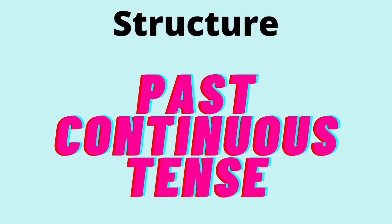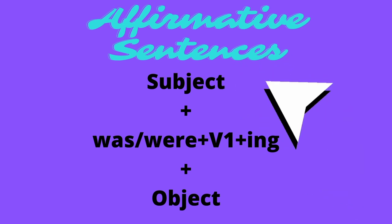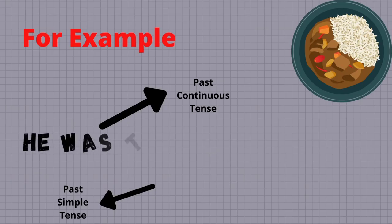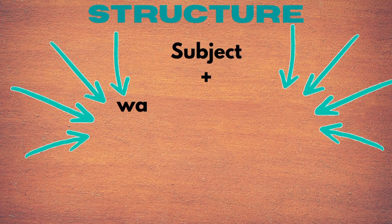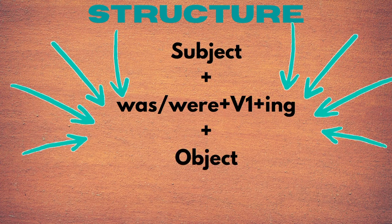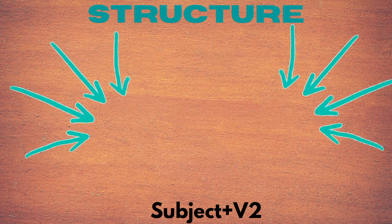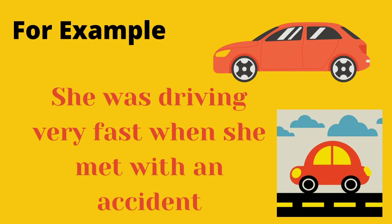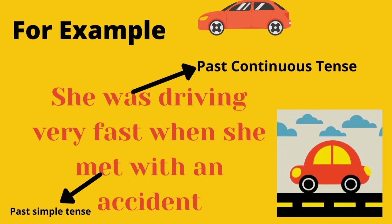For affirmative sentences, the structure is: subject plus was/were plus first form plus -ing plus object, usually in combination with past simple. For example: 'He was taking his meals when I called him.' Another example: 'She was driving very fast when she met with an accident.' This is again a union of past continuous and past simple tense. Practice it and enjoy the learning.